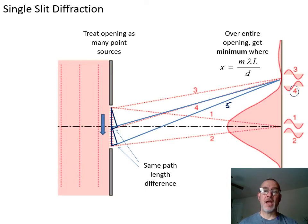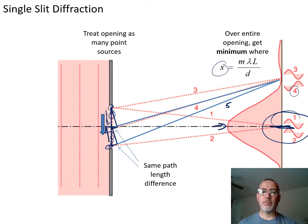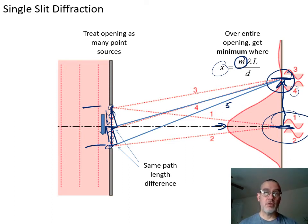We're going to use the same equation: X equals M lambda L over D. X is still the distance from the center bright fringe. In the center, matching outside points working inward always gives constructive interference, so the middle is bright. But when M equals 1, instead of getting a bright as we would with double-slit, with the single slit we get a dark where we would have gotten a bright with a double slit of the same width. That's the key: for single-slit, you get a dark where you used to get a bright.